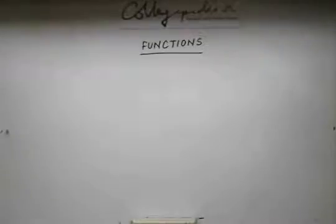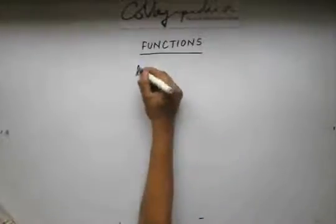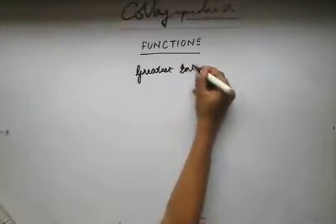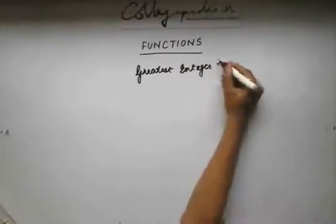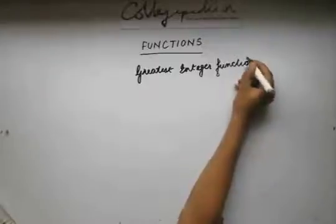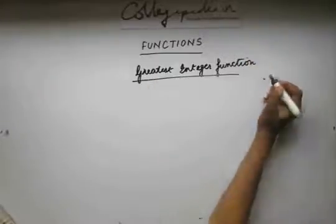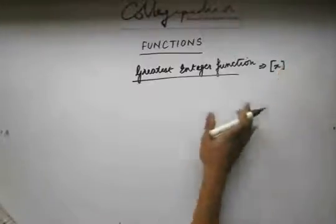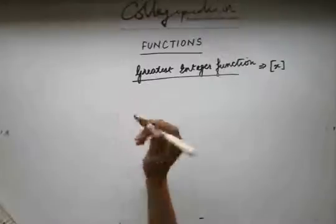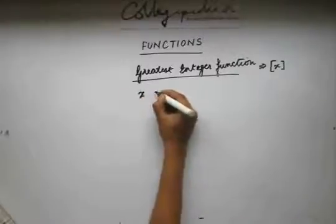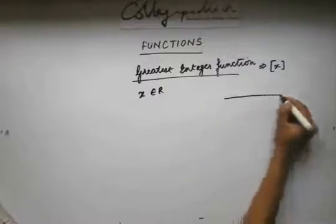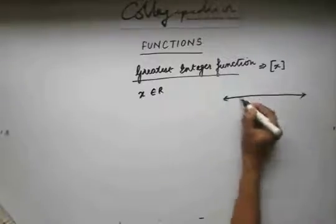Now we move on to the next important standard function known as the greatest integer function. This greatest integer function is denoted by box x. Let's see what a greatest integer function is. Let's assume that x is a real number. You know that a real number can be represented on a number line.